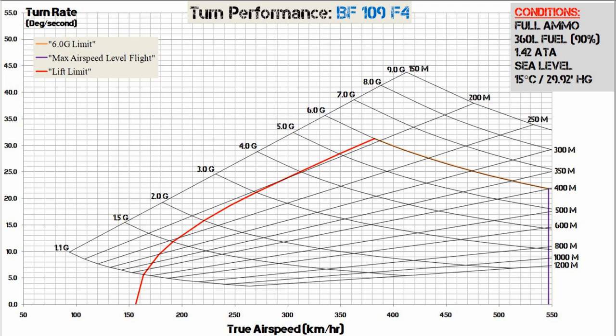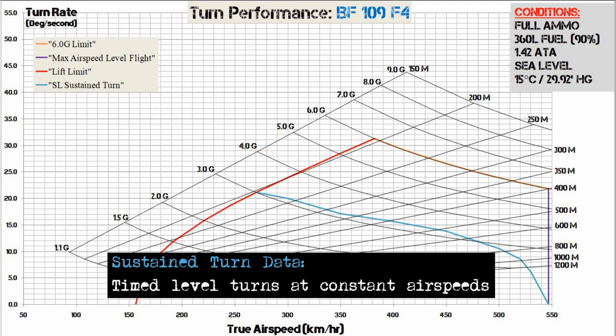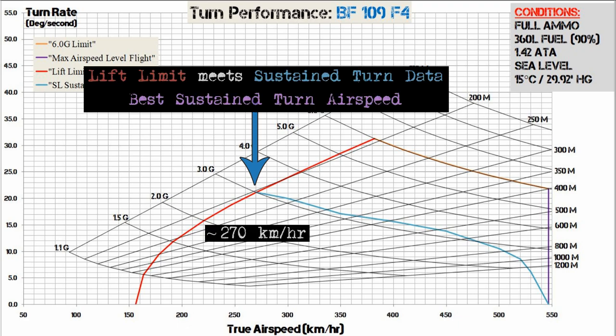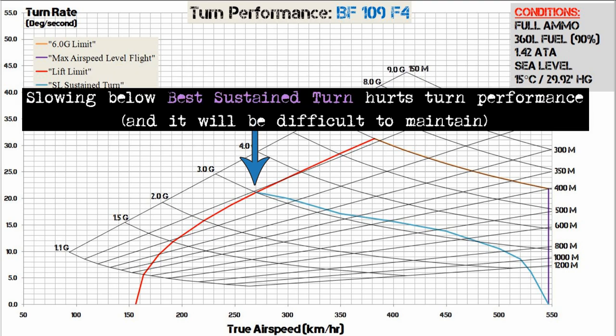Now we're going to overlay the 109's sustained turn data onto the graph. This data was obtained by flying circles, timing how long it took to complete 360 degrees multiple times, and averaging the results. The data shows a trend of increasing turn rate up until it meets the lift limit, which is known as the best sustained turn airspeed — around 270 km/h for the 109. Flying slower than 270 will cause a decrease in turn rate and an increase in turn radius, hurting turn performance.